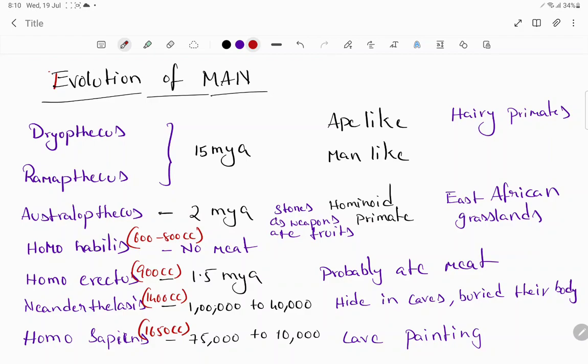So these are the things we have to remember regarding the evolution of man. Australopithecus is 4 feet tall. They found Dryopithecus and Ramapithecus fossils in Tanzania and Ethiopia. For Australopithecus, they found the fossils in East African grasslands.